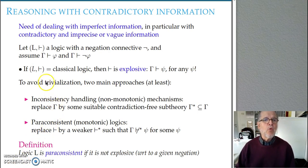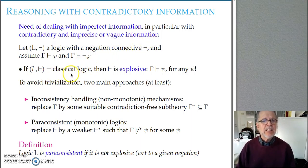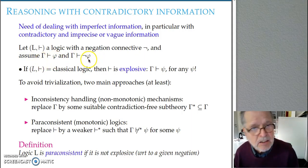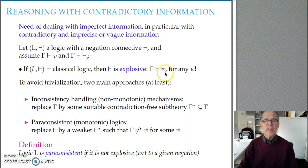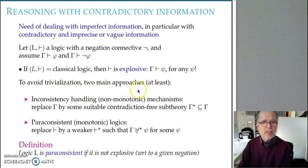In the real world, the need of dealing with imperfect information — contradictory, imprecise, or vague information — is quite usual. In classical logic, if you have some set of premises that is inconsistent, in the sense that phi and not-phi is possible, the logic is explosive, meaning all conclusions become possible. To avoid this trivialization, there are at least two main approaches.